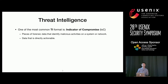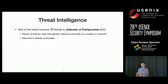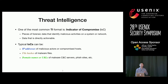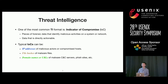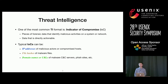Among this broad set of threat intelligence formats, one of the most common is what we call indicators of compromise. These are forensic data that identify malicious activities in a system or network, and they are directly actionable. They can be IP addresses of malicious actors or compromised hosts, file hashes that identify malicious malware, or domain names and URLs of malware command-and-control servers or phishing sites. We can directly use this data to block malicious traffic or identify malicious files on our system.